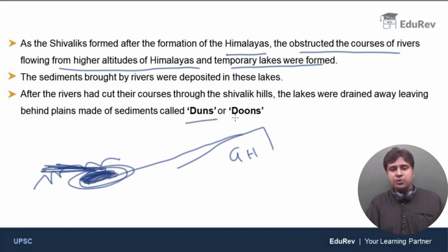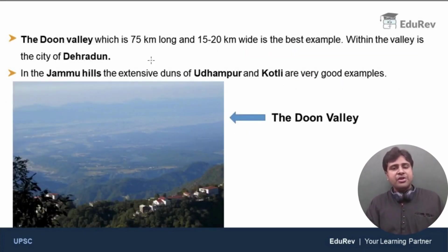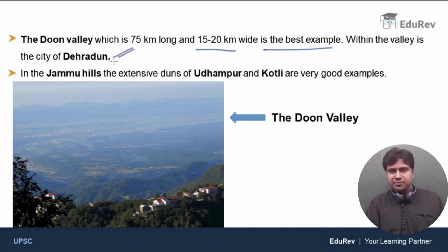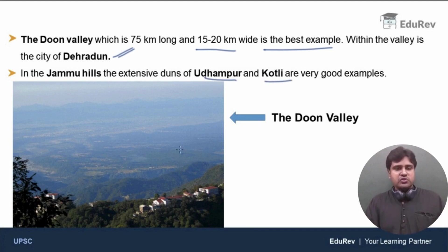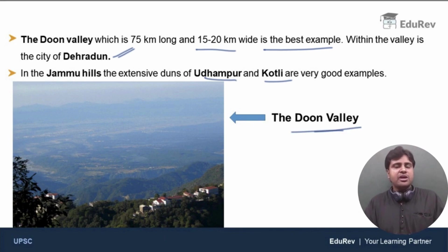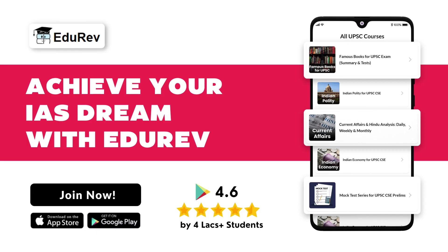These plains left behind by the drained lakes are called Duns or Doons. The Doon Valley — 75 kilometers long and about 15 to 20 kilometers wide — is the best example, and within it lies the city of Dehradun. Apart from that, in the Jammu Hills area, we have the Duns of Udhampur and Kotli, which are large and extensive Duns. In this video, we discussed about the Shivaliks and the formation of Duns — a very, very important concept.